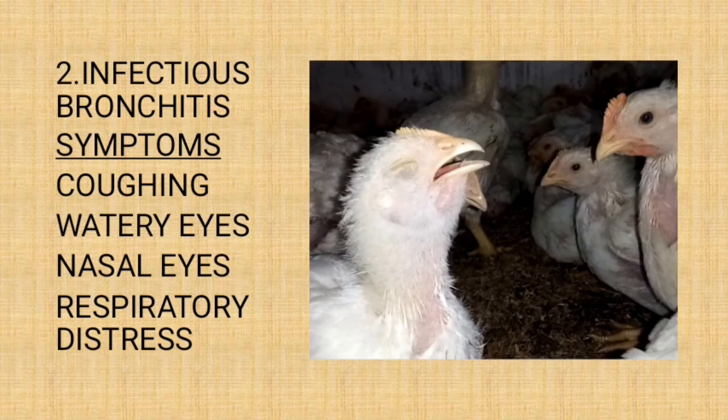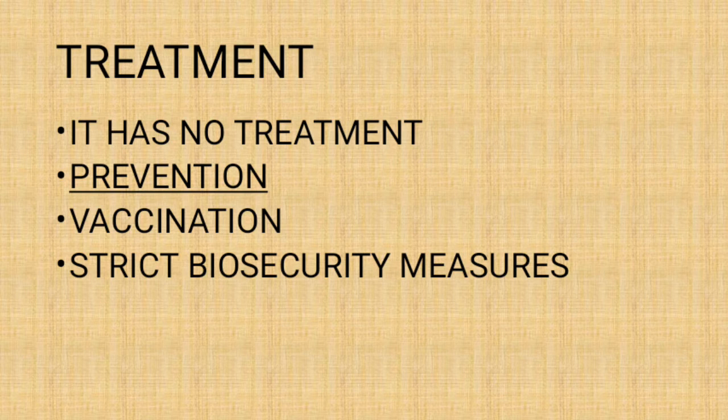The next infectious disease is infectious bronchitis. The same way human beings have flu, chickens also have infectious bronchitis. The major signs are coughing and respiratory distress, whereby you see your poultry struggling to breathe, as you can see in the picture. Same as fowlpox, it has no treatment, but you can vaccinate and ensure strict biosecurity measures.